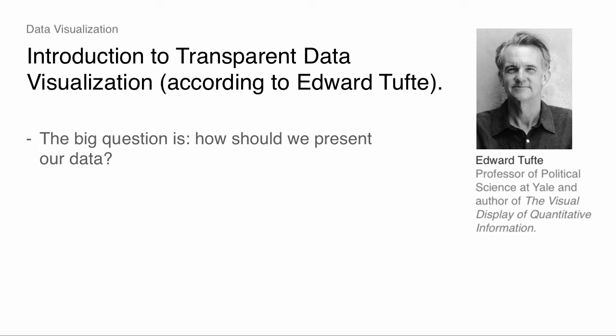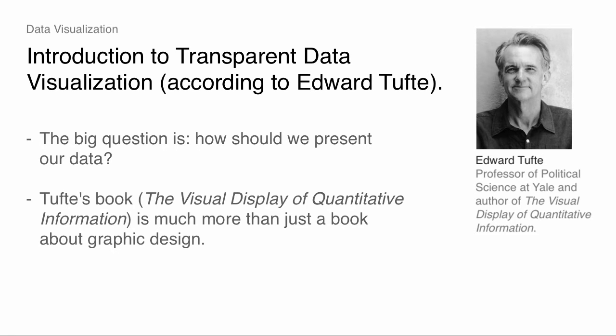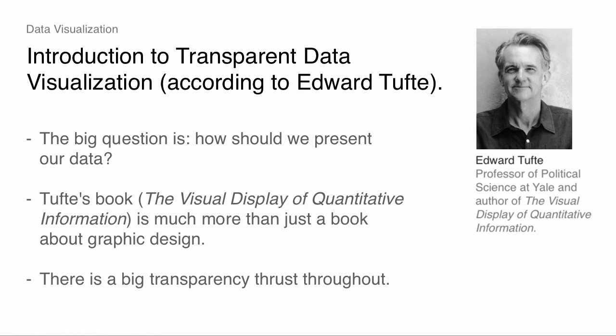Tufte is a professor of political science at Yale, used to be at Princeton, and published empirical work in political science for a while. But he was always really good at and really interested in graphical depiction of data, and eventually that sort of became his day job. What's neat about Tufte's book is it's much more than just graphic design — there are elements of that, but also sophisticated discussion of causality and research design at various points. There's also a big transparency thrust throughout, seen in his principles about accurate ways of conveying information and data.